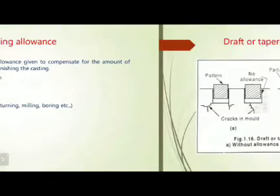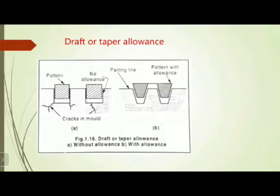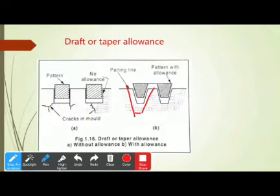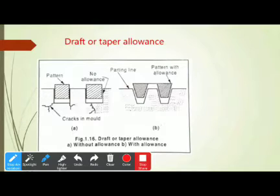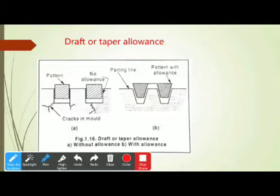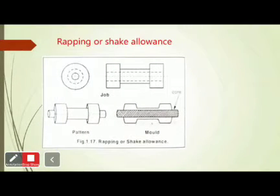Next is the draft or taper allowance. The diagram on screen shows the taper. Using this taper or draft allowance we can easily remove the casting from the cavity with no disturbance to the casting product. The allowance must have 1 degree to 3 degrees of taperness per 1 meter.